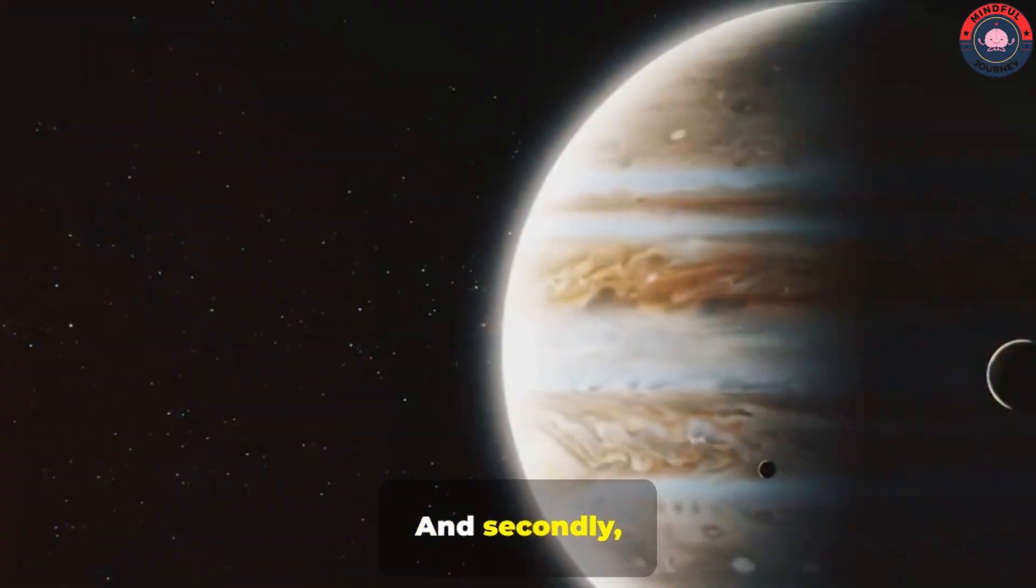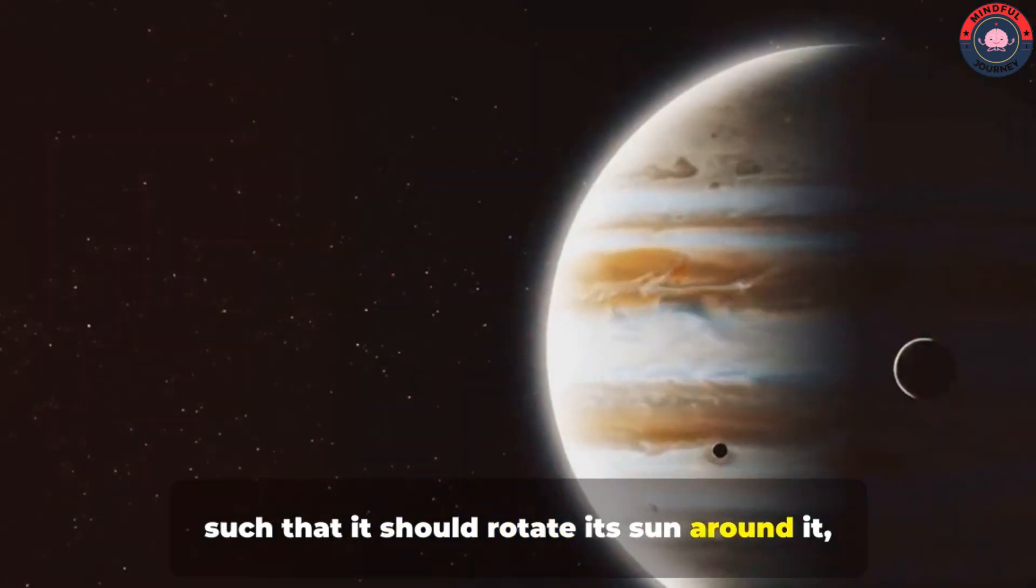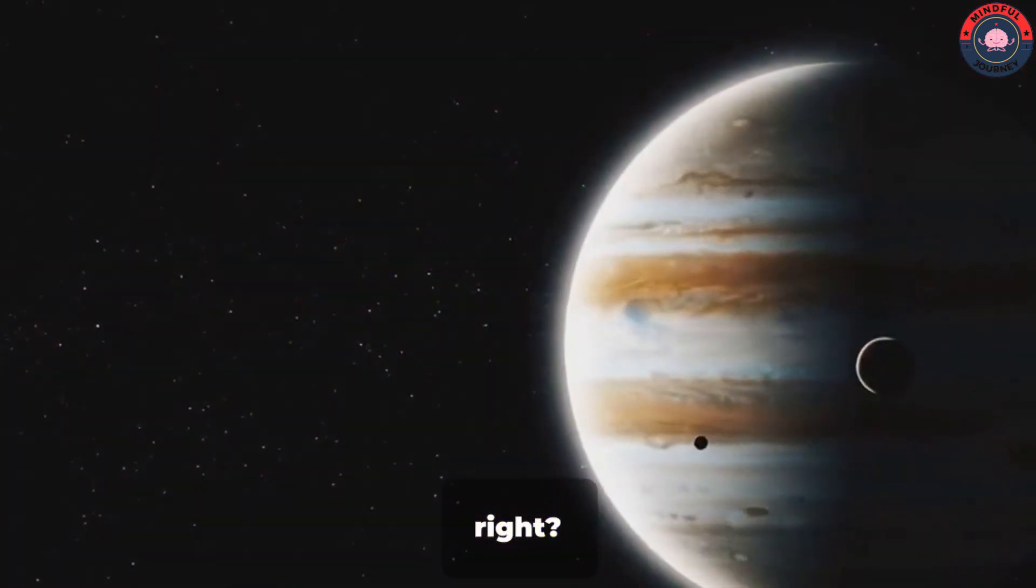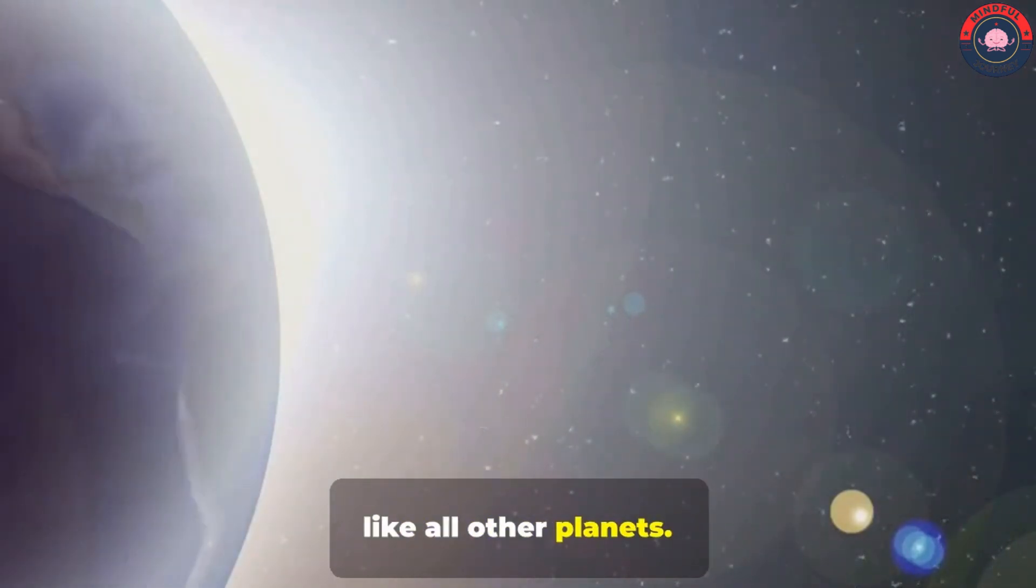And secondly, the gravity of such a huge planet will be such that it should rotate its sun around it, not vice versa. But it is rotating around its own star like all other planets. How is this possible?